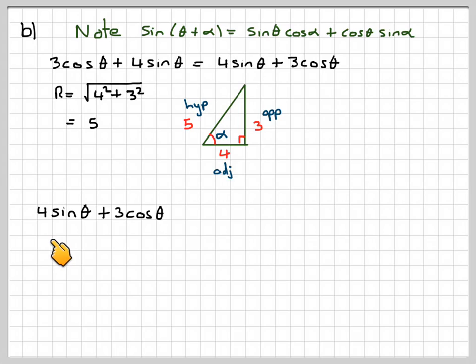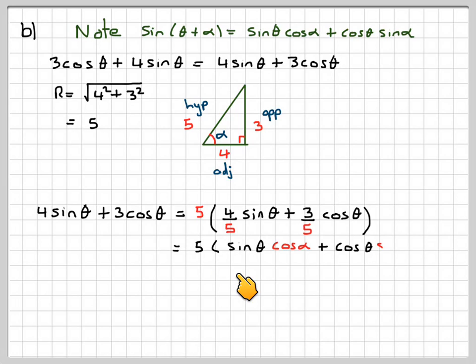So 4 sine theta plus 3 cos theta is 5 times, in brackets, 4 over 5 sine theta plus 3 over 5 cos theta, which is going to be 5 times sine theta cos alpha plus cos theta sine alpha.